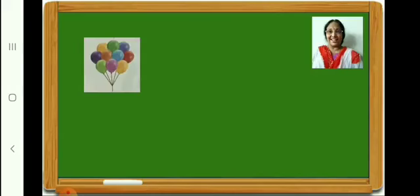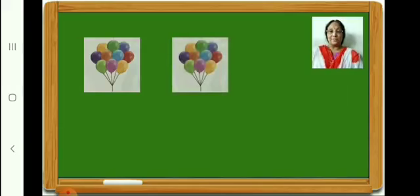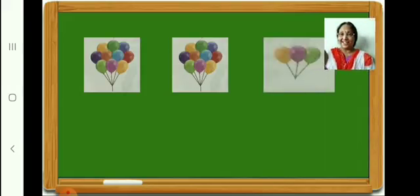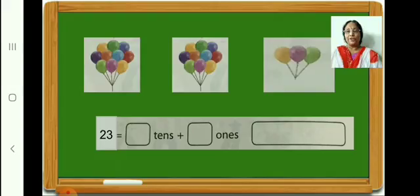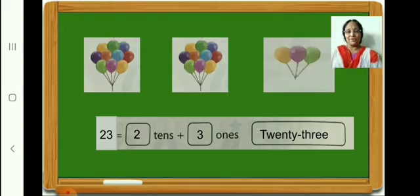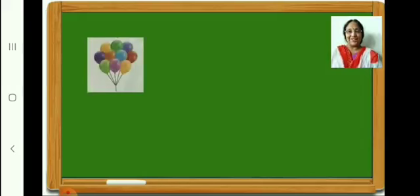How many balloons are there in the bunch? Ten. Here in this bunch, how many balloons? Ten. In this bunch, how many balloons? Three. Therefore, in all there are 23 balloons. 23 is equal to 2 tens plus 3 ones. 23 is written in your textbooks. Now, take out your pencil and eraser.